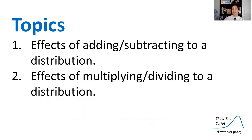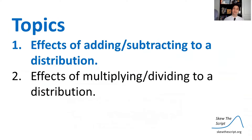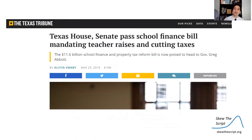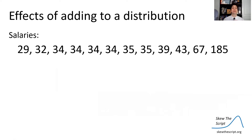We're going to start with the effects of adding and subtracting to a distribution of data before analyzing wealth inequality. A couple of years ago, the Texas state legislature passed a bill in which teachers got a raise. Politicians decided to have a conversation about how these raises should be distributed. Let's talk about if they decided to do a flat raise, where everyone gets the same amount added to their salary. Say we use the salary distribution from Unit 1. A master administrator gets $185,000 and the lowest paid teacher, maybe a new teacher, gets paid $29,000.